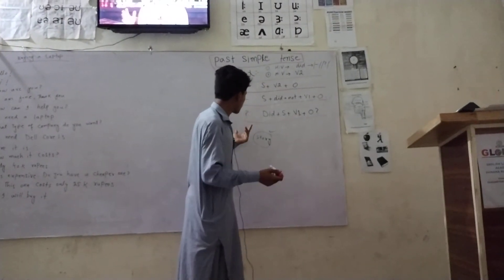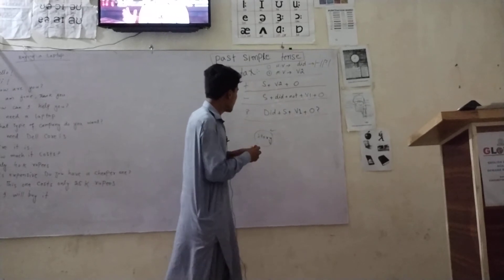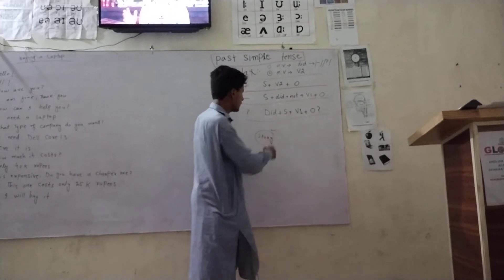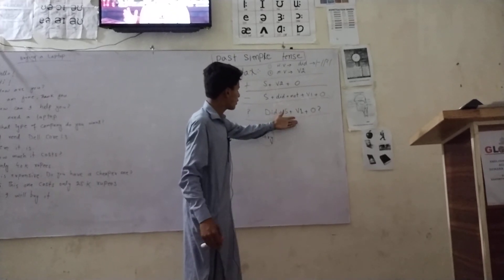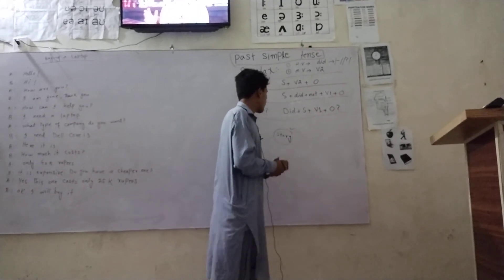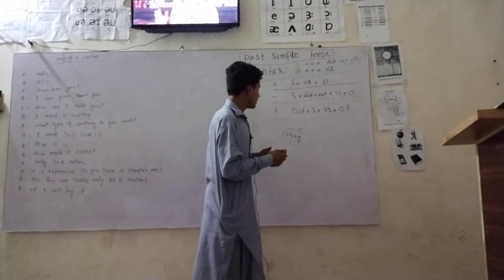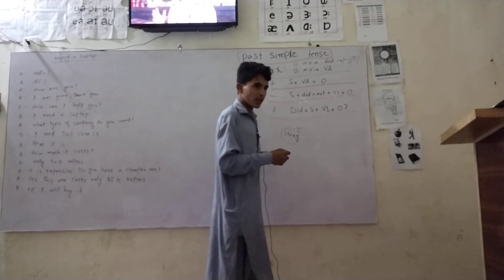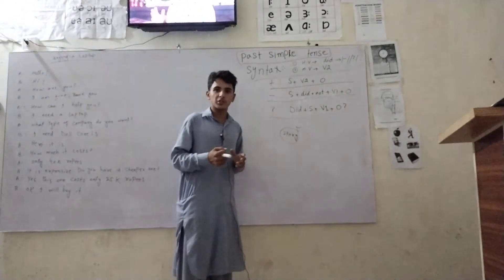How to make interrogative sentences in past simple tense. At the beginning of the sentence we use 'did.' After that, the subject. After that, the first form of the verb, plus object and question mark. For example: Did I eat the meal? Did I write a story? Do you have any questions?